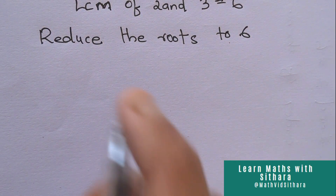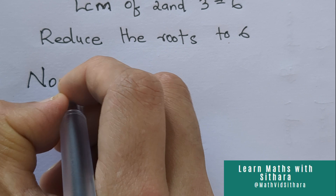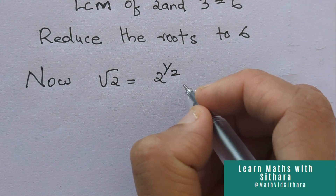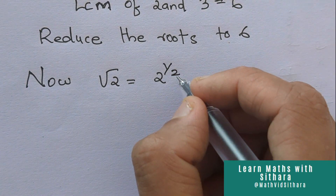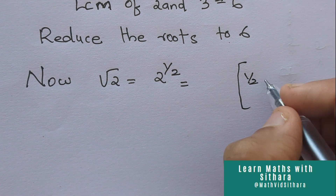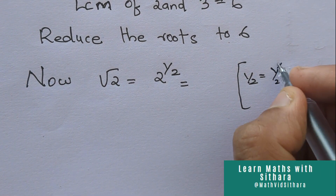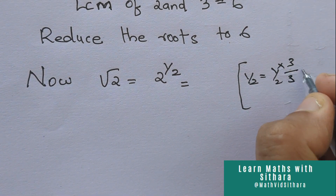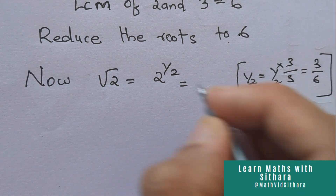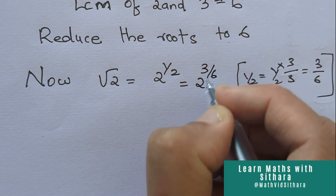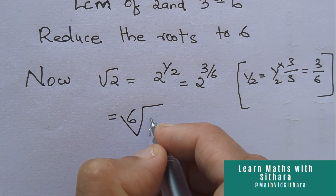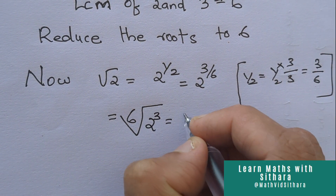First, we take root 2. We know root 2 equals 2 raised to 1 by 2. We find the equivalent fraction such that the denominator becomes 6 — multiply the numerator and denominator by 3 to get 3 by 6. Putting 3 by 6, we get 2 raised to 3 by 6, which equals the 6th root of 2 cubed. Since 2 cubed equals 8, this gives us the 6th root of 8.